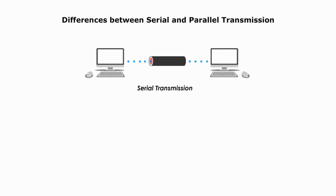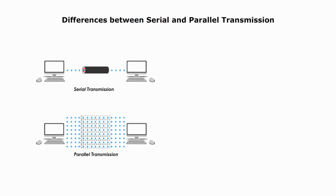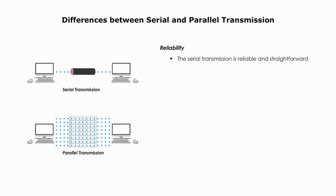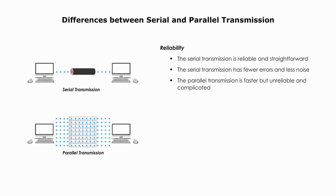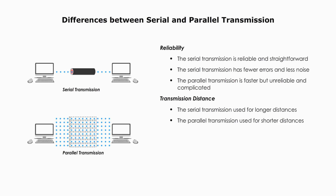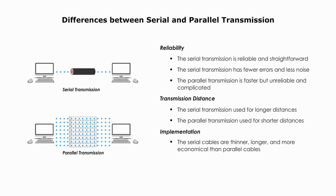Let's summarize the differences between serial and parallel transmission. In terms of reliability, serial transmission is reliable and straightforward, with few errors and less noise. Parallel transmission is faster but unreliable and more complicated. In terms of transmission distance, serial transmission is used for longer distances, while parallel transmission is used for shorter distances. In terms of implementation, serial cables are thinner, longer, and more economical than parallel cables. Serial is cheaper to implement and is more popular.